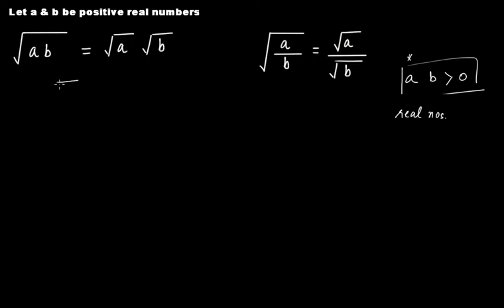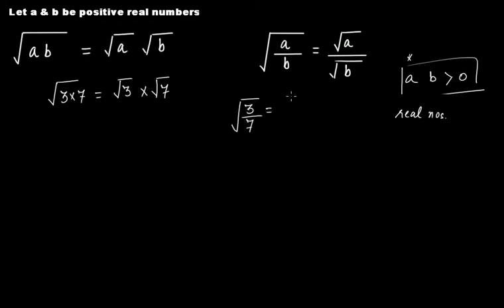For example, square root of 3 multiplied by 7 is equal to square root of 3 multiplied by square root of 7. Similarly, this gives us another identity: square root of a divided by square root of b.